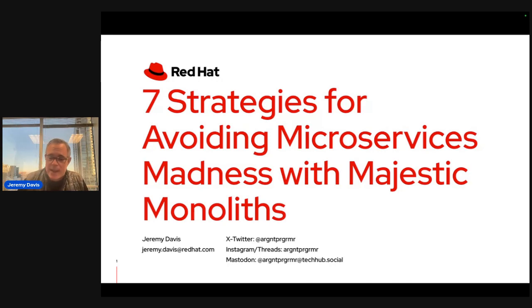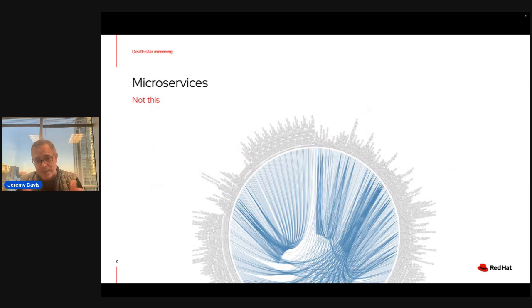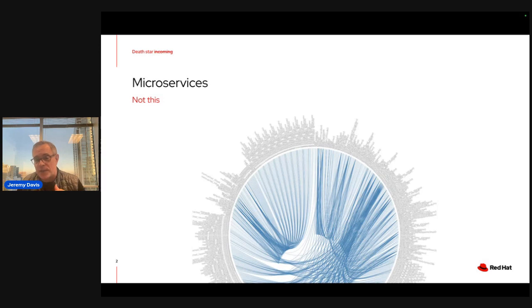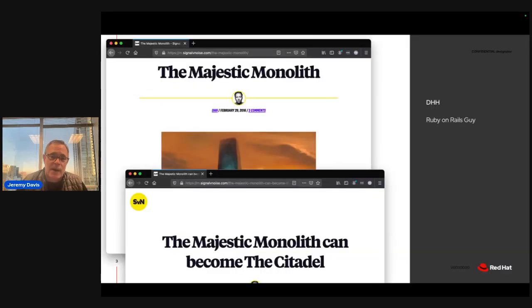A couple of years later, you end up with the microservices Death Star — services that explode everywhere, becoming very difficult to version across. They often become coupled together, so you end up with distributed monoliths. There were a lot of problems in building microservices, and having done a couple of projects with this architecture, I was reminded of Fowler's caution not to begin with microservices.